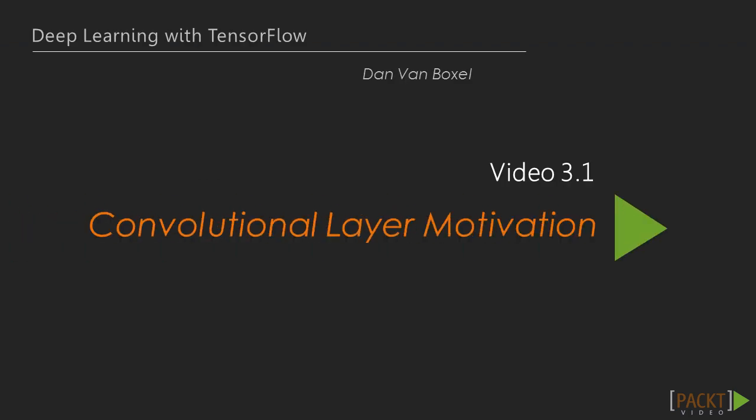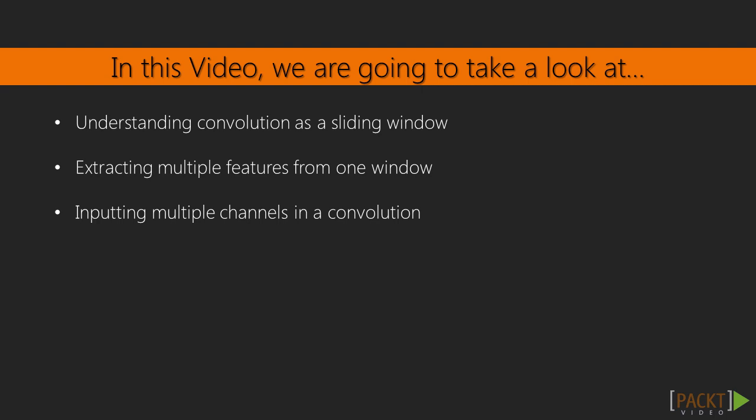Now let's jump into just what a convolutional layer is. In this video, we're going to walk through using a convolutional layer on an example image. We'll graphically see how a convolution is just a sliding window. Further, we'll learn how to extract multiple features from a window as well as accept multiple layers of input to a window.